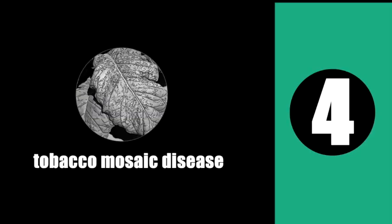Number 4. Isolation of viruses that cause the tobacco mosaic disease led to a better understanding of the nature of these agents. Researchers found out that viruses isolated from infected tobacco plants can pass through filters designed to trap bacteria, and the filtrate remained infectious even though the infectious agents cannot be seen with a microscope.